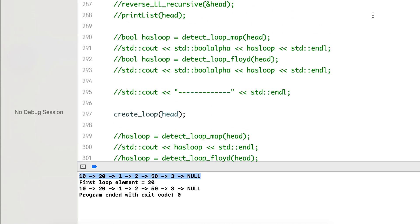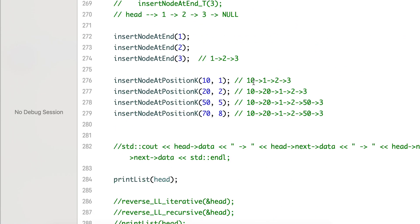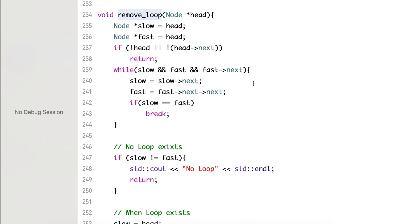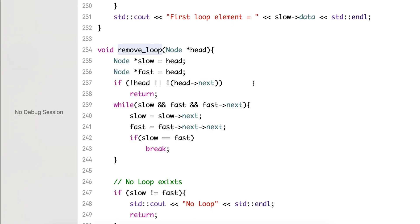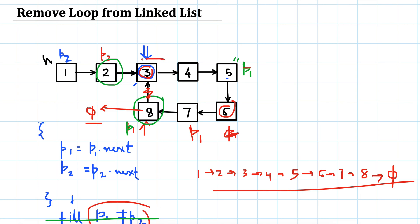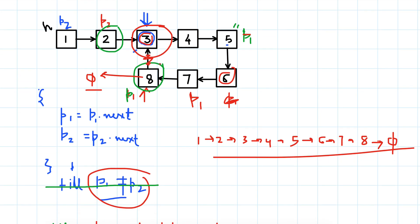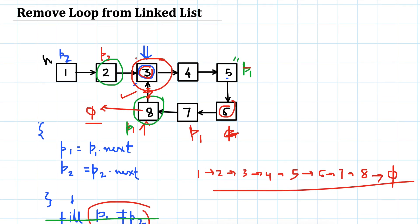This is how we can modify Floyd's algorithm. First we saw one application where we figured out if there is a loop in the list. In the second application we found the first element of the loop. And now we have used the same algorithm to remove the loop. I will give a link to the previous videos in the video description, so don't forget to watch those. Thanks for watching and please give your valuable feedback in the comment section.